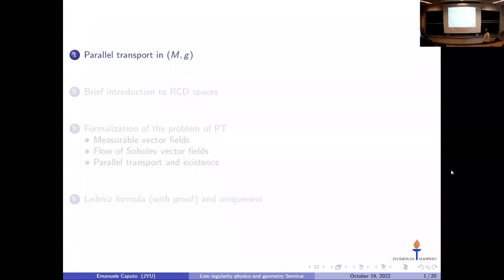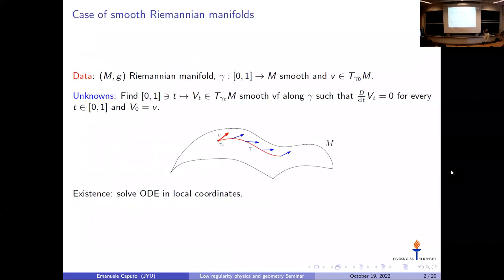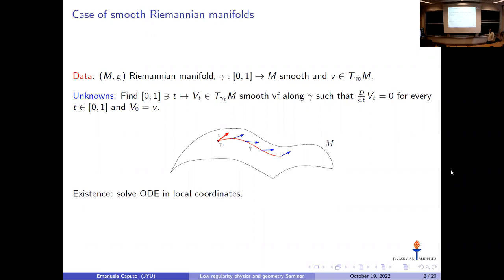Let's start with the problem in the smooth setting. We consider a smooth Riemannian manifold (M, g) and a smooth curve gamma with values in the manifold. We consider a vector V belonging to the tangent space at the initial point. The goal is to find a smooth vector field along gamma — a function associating to each time t a vector V_t in the tangent space at gamma(t) — such that the covariant derivative with respect to the velocity of the curve is zero at every time, with initial condition V_0 = V.